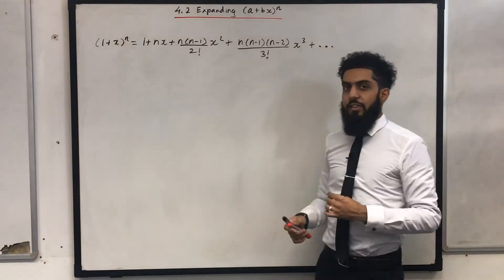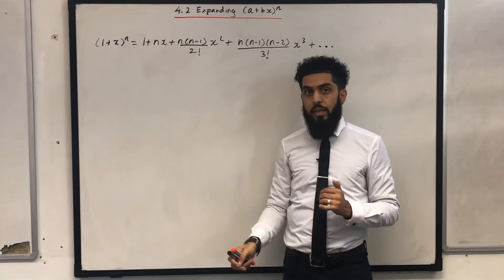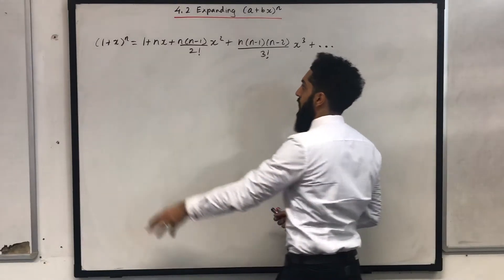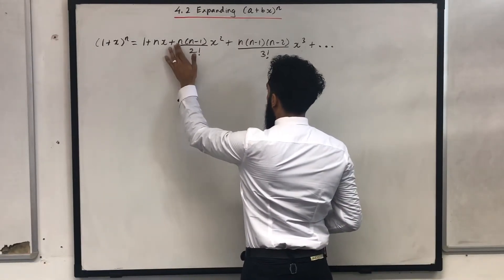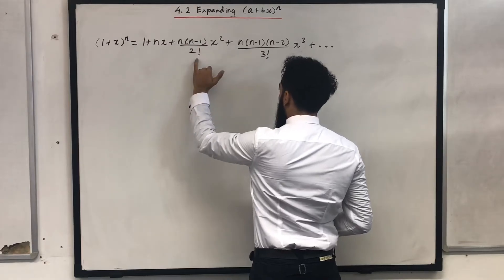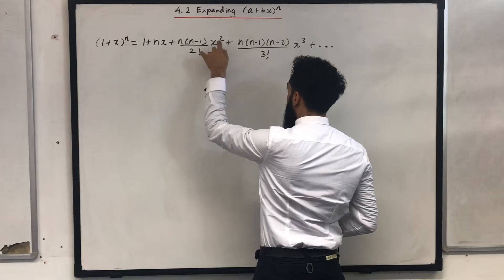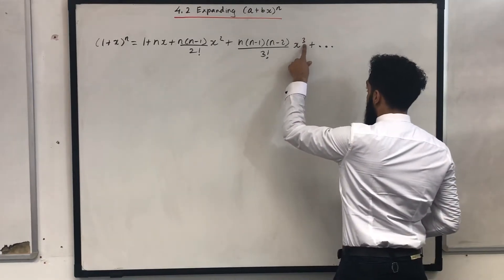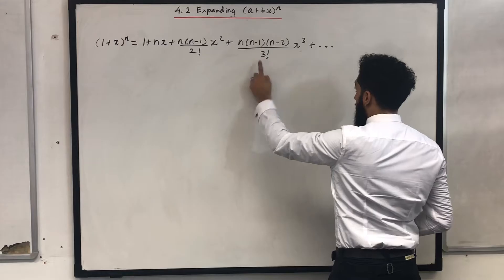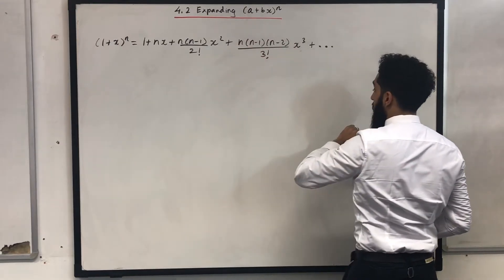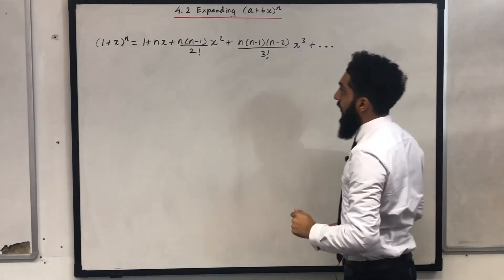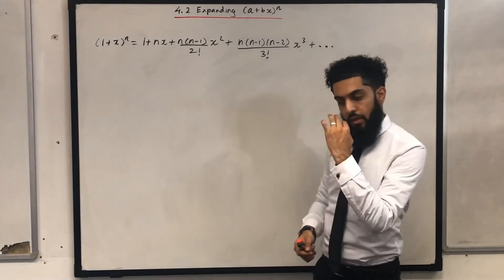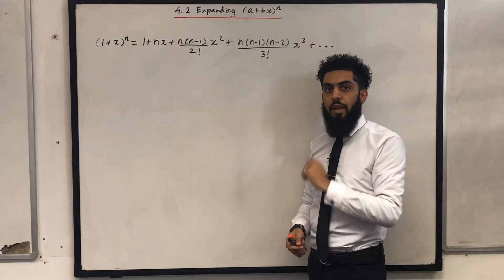I would say that students need to know this formula, even though it's given in the formula booklet, because it's not too bad to memorise. There's a certain pattern: we've got nx, then n(n−1) over 2 factorial times x squared, so that power 2 matches the denominator 2. Over here we've got power 3, which matches the denominator 3, and what we've added extra is (n−2). So in the next term we will have n(n−1)(n−2)(n−3) all over 3 factorial times x to the power 3, and so on. That is the pattern.